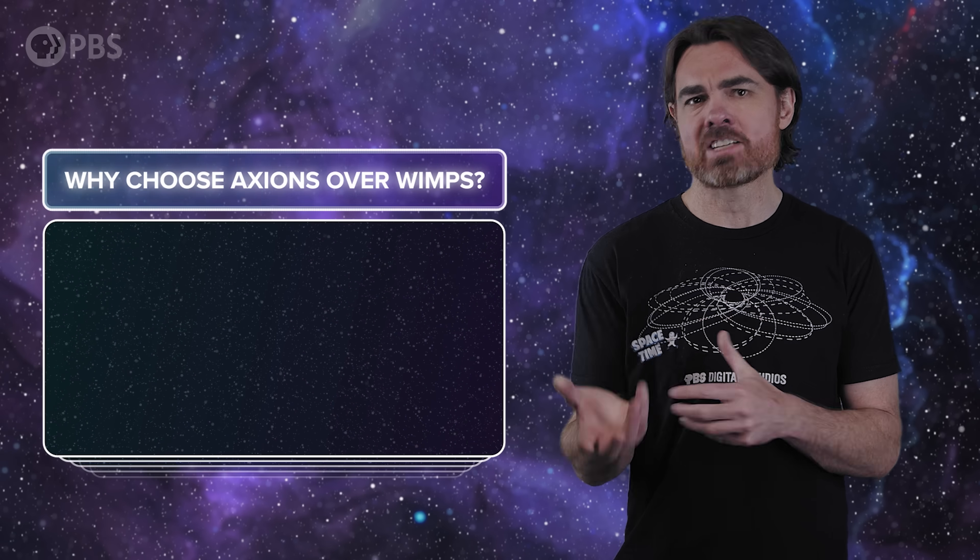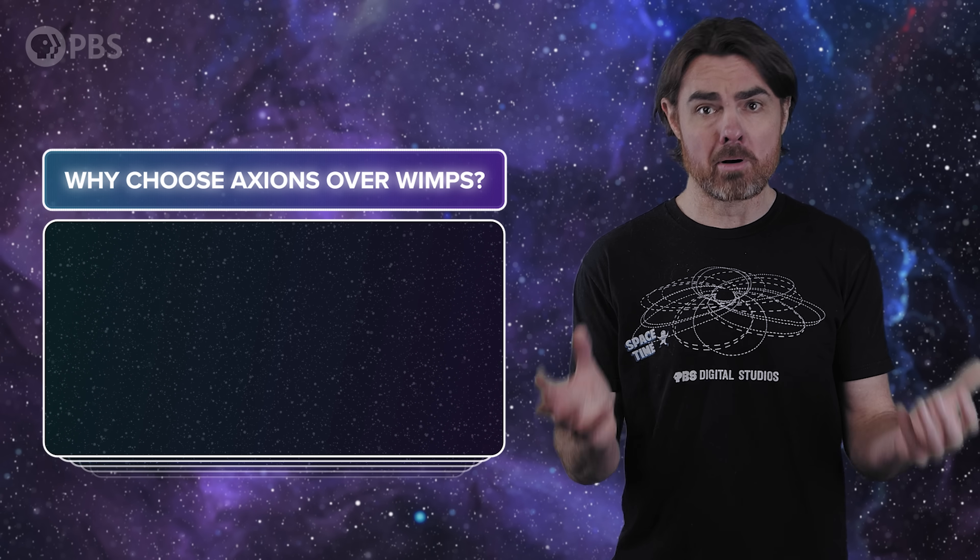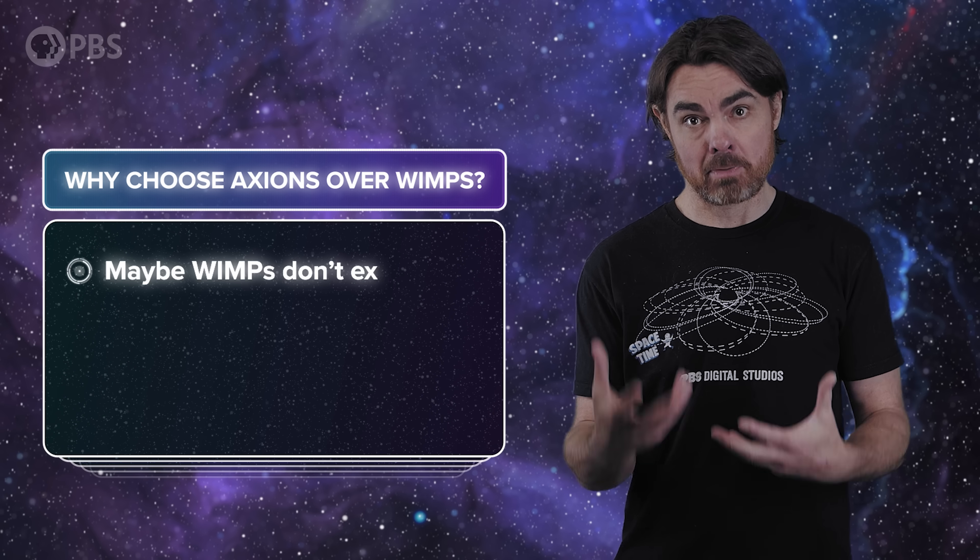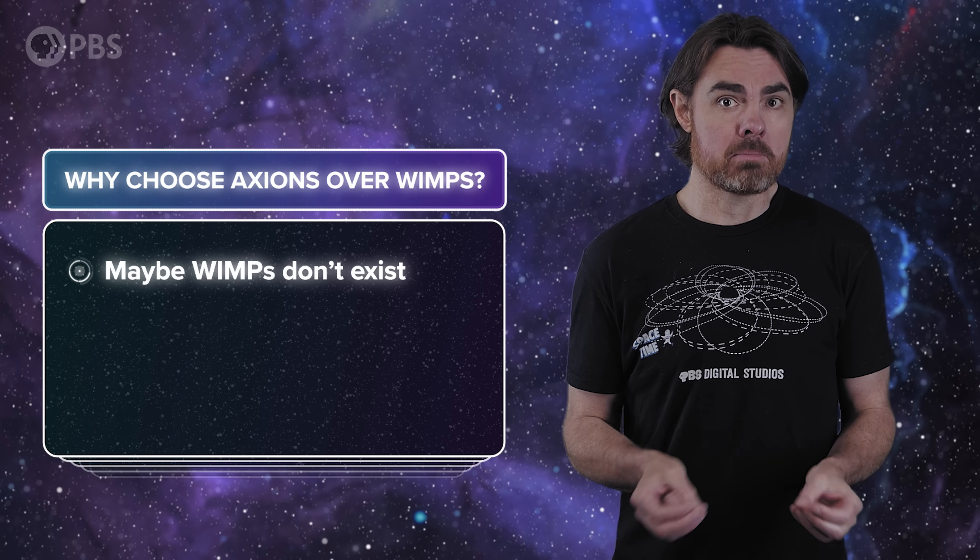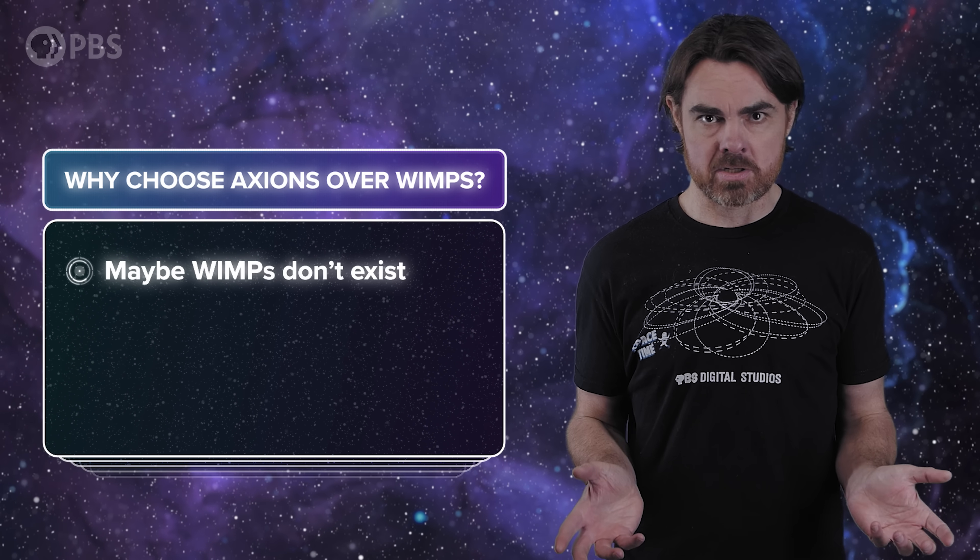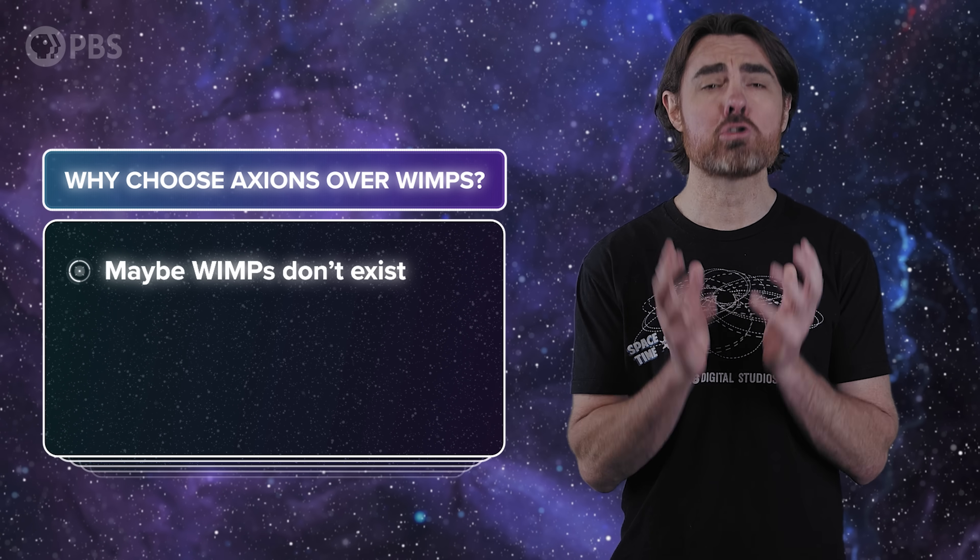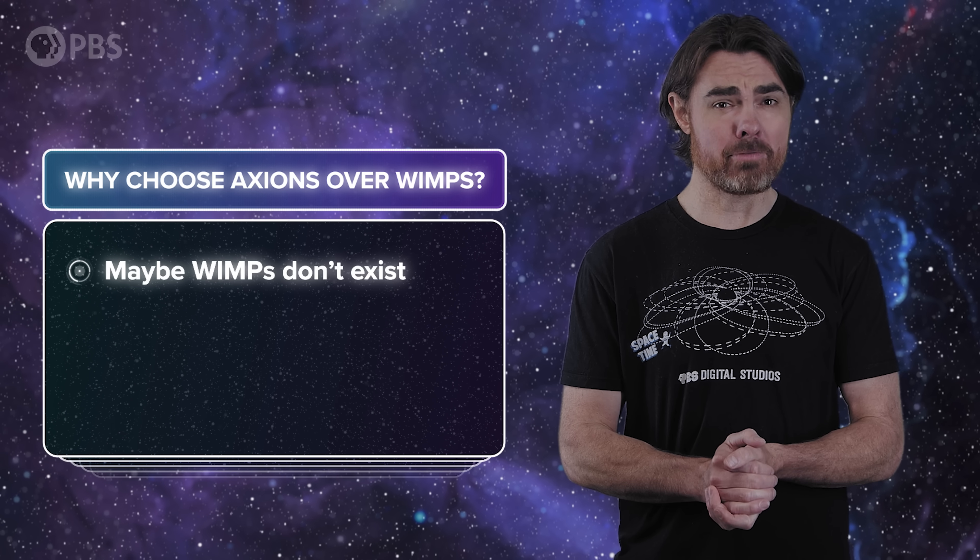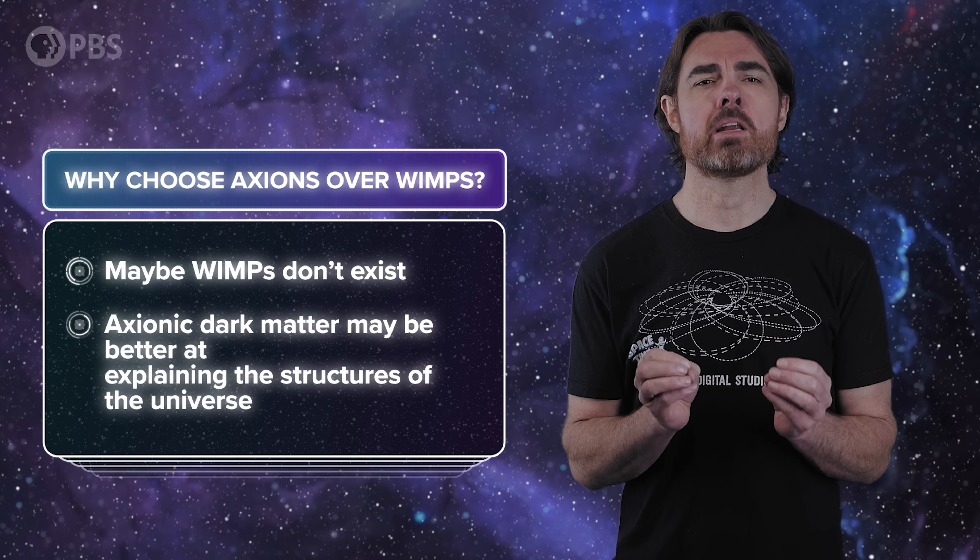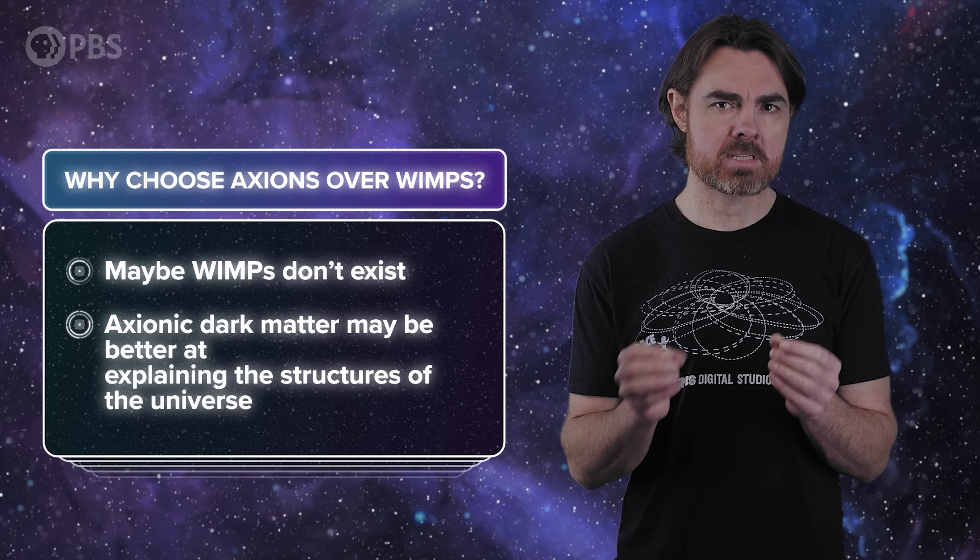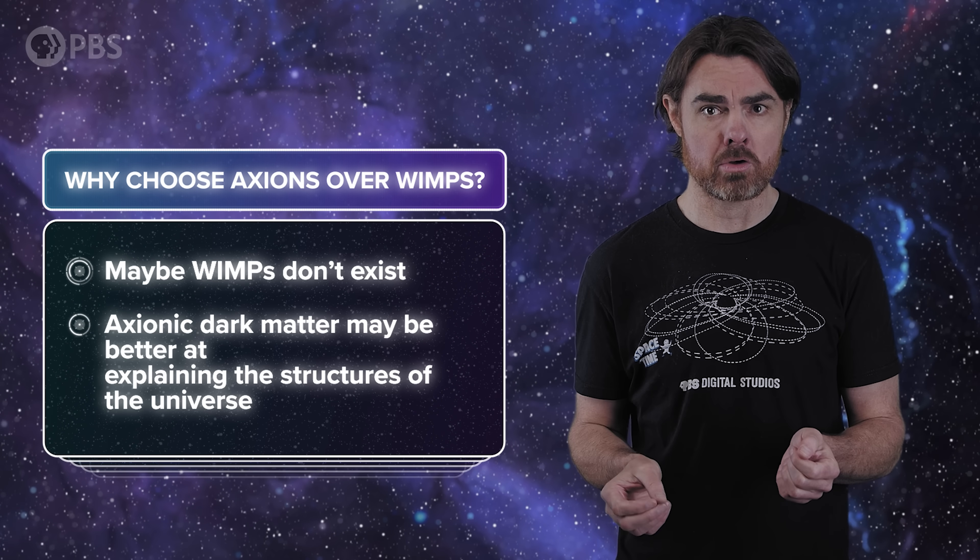So why choose axions over WIMPs? For one thing, it's good to explore all the possible alternative explanations, and maybe this explains why no WIMP particles have ever been detected—it would be because they don't exist. On the other hand, the fact that axionic dark matter can very closely resemble WIMP dark matter is going to make it difficult to discriminate between the two. There's another reason to consider axionic dark matter over WIMPs, and that's because it may do an even better job at explaining the structures we see in the universe.